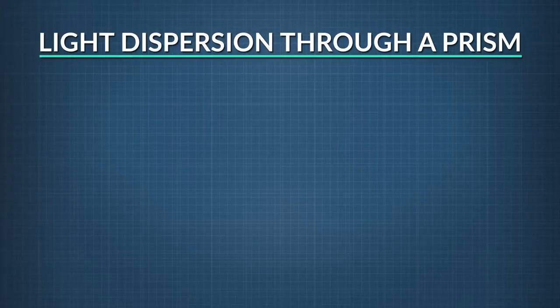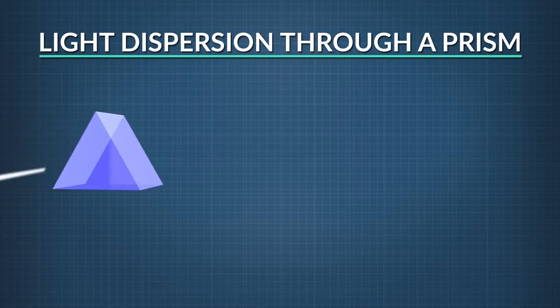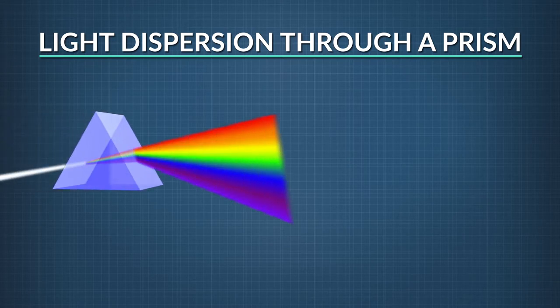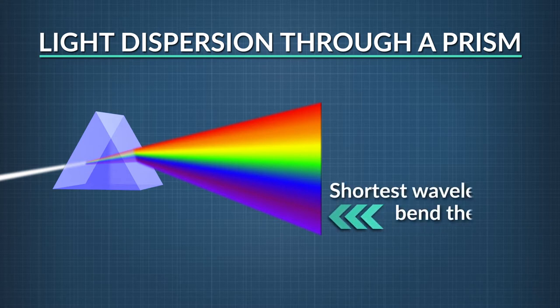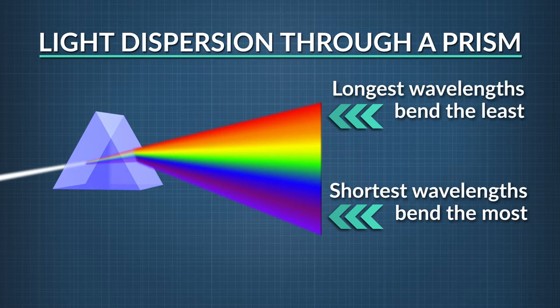Refraction has other tricks up its sleeve — well, not tricks, it's all science, but it's still pretty amazing. You know how a prism bends the light and breaks it into different colors? When that happens, the beam of light is being refracted. But when the light hits the glass, some wavelengths bend more than others. The shortest wavelengths — the violet ones — bend the most. The longest ones — the red ones — bend the least.